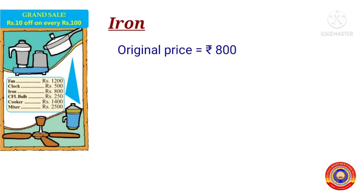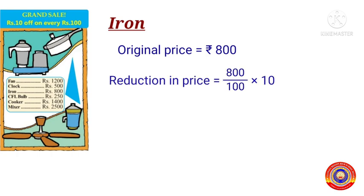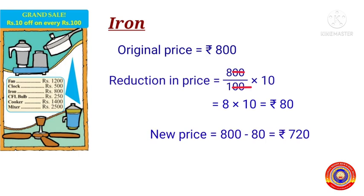Next item is the iron. The original price of an iron is equal to 800 rupees. The reduction in price is equal to 800 ÷ 100 × 10. After cancelling the zeros from both the numerator and the denominator, we get the reduction in price as 8 × 10, that is equal to 80 rupees. Therefore the new price of an iron is equal to 800 minus 80, that is equal to 720 rupees.